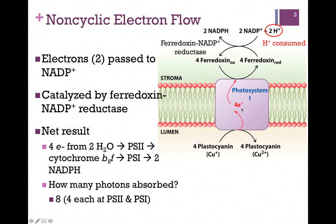What occurs in non-cyclic electron flow is that the electrons are passed from ferridoxin to NADP+. NADP+ is similar to NAD+ in that it can accept two electrons and one proton. So if we have four electrons to transfer, we need two of those NADP+ molecules, and our end product is NADPH. This reaction is catalyzed by ferridoxin NADP+ reductase.